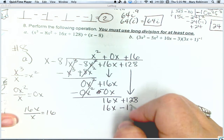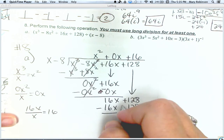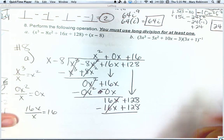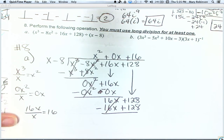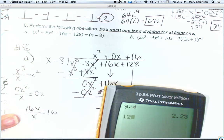16x minus 80 and 48. 128. Draw your line. Change your signs.